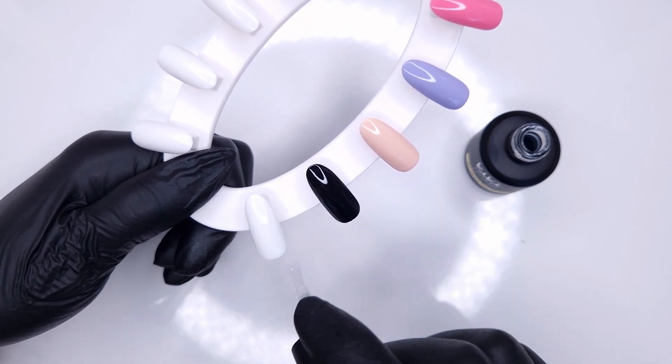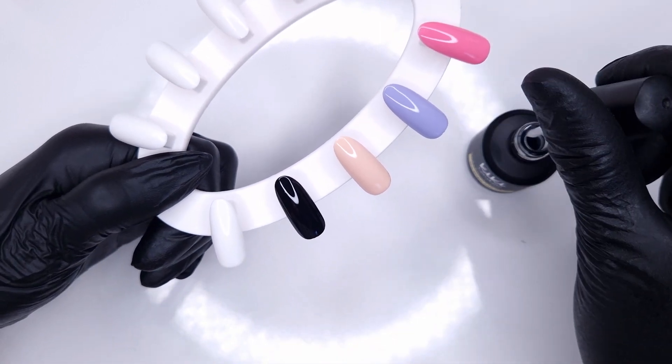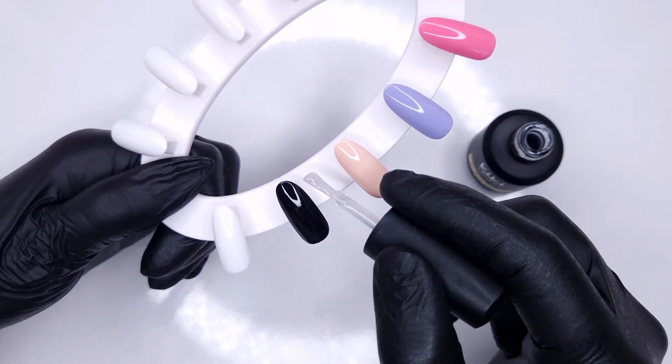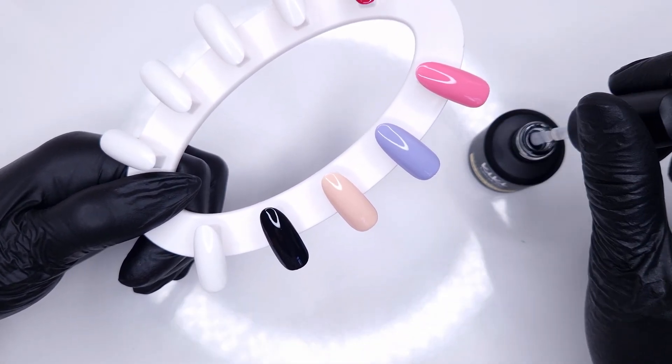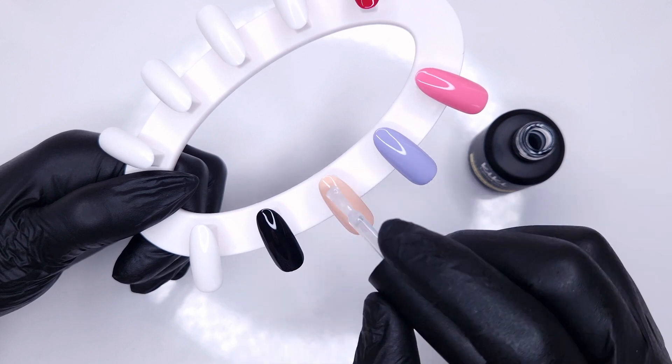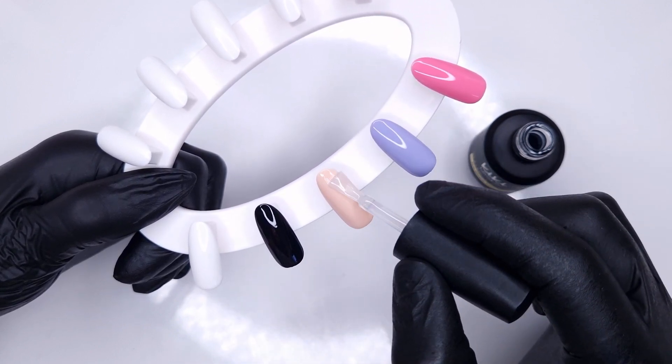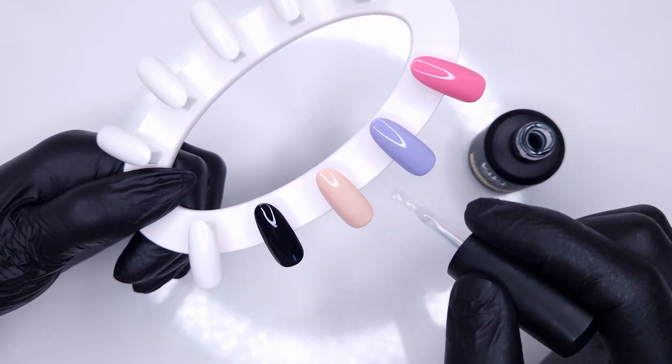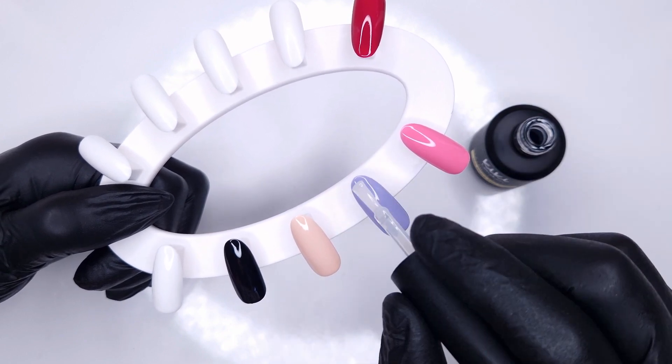So now we're going to come in and top coat. Now the no wipe top coat has a thin consistency so I like to just gently float it over my colors, apply a nice thin yet even coat and then this does require a 60 second cure in an LED lamp. If you're using a UV you want to aim for a two minute cure. And then that concludes the six new Kiki London Hema Free gel polishes.